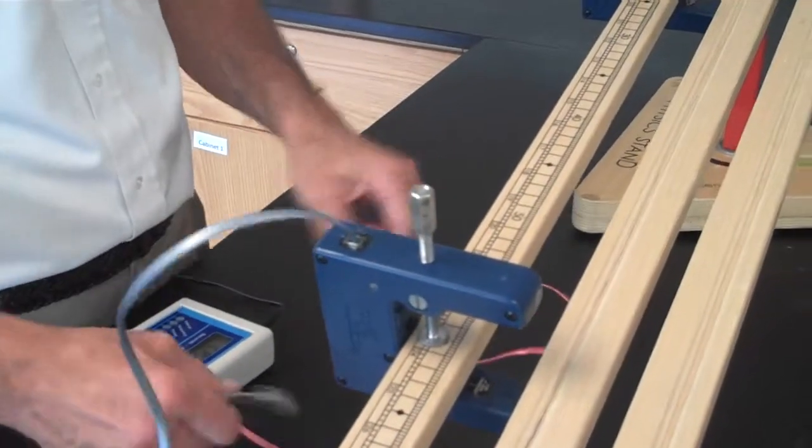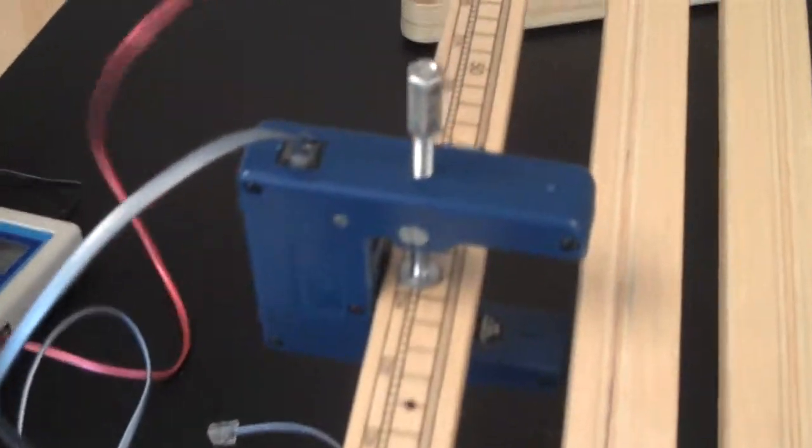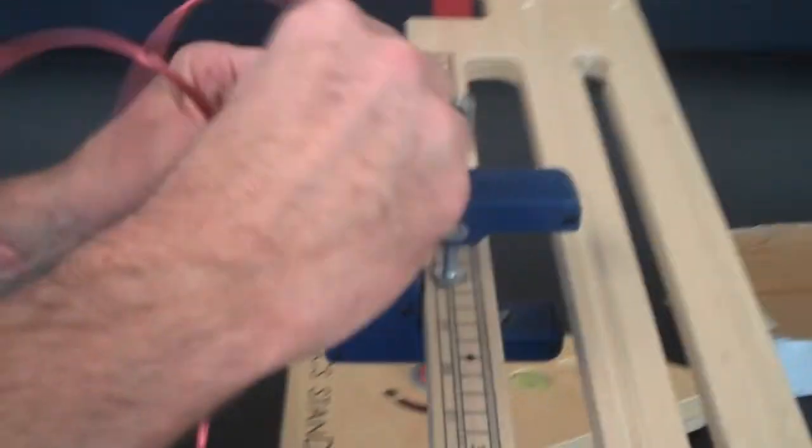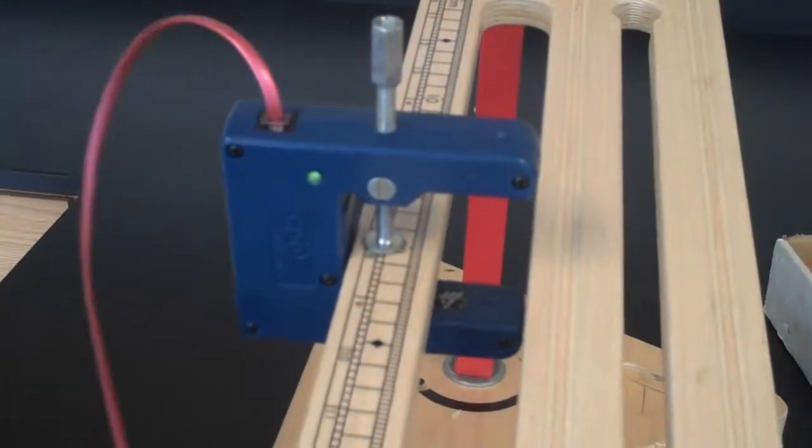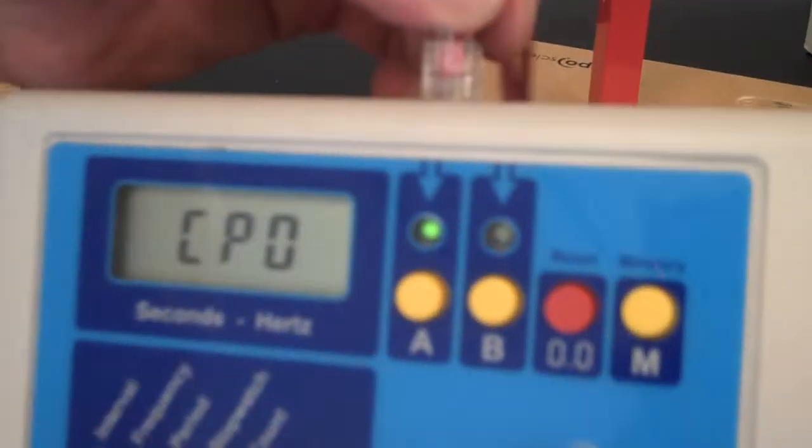It's very easy to get confused and have the cords mixed up. What you're going to want to do is make sure that your phone jack is plugged into the photo gate, and make sure that the top photo gate, which is A, is plugged into the A jack on the timer.